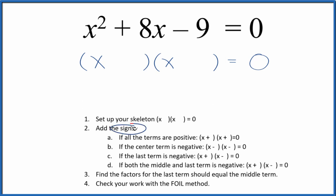Then we can add the signs. So I see the last term is negative, negative 9. Last term is negative. We're going to put a positive and a negative in our skeleton equation, like this.